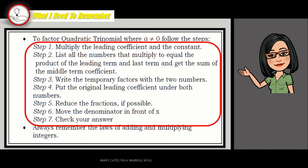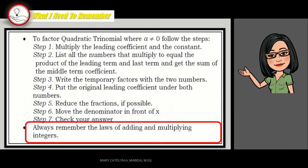Step 4: Put the original leading coefficient under both numbers. Step 5: Reduce the fractions if possible. Step 6: Move your denominator in front of X. Step 7: Check your answer. And of course, always remember the laws of adding and multiplying integers will come to play in this factoring method.